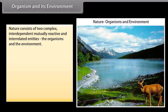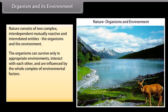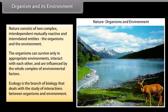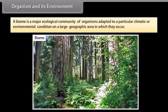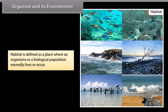Nature consists of two complex interdependent, mutually reactive and interrelated entities: the organisms and the environment. Organisms can survive only in appropriate environments, interact with each other, and are influenced by environmental factors. Ecology is the branch of biology that deals with the study of interactions between organisms and environment. A biome is a major ecological community adapted to a particular climatic condition on a large geographic area. Habitat is defined as a place where an organism or biological population normally lives or occurs.